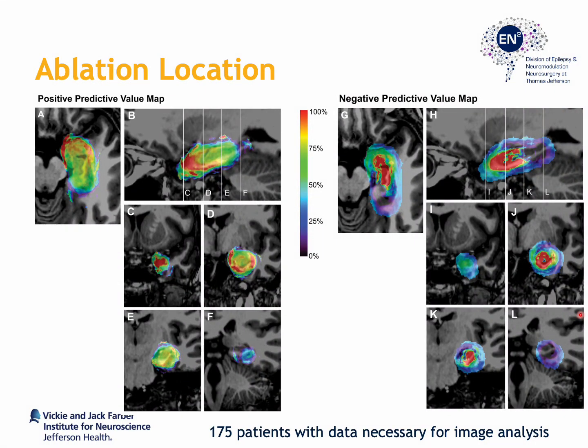On the positive predictive value map, we can see the importance of including mesial and anterior portions of the mesial temporal lobe within the ablation cavity, specifically including the anterior amygdala, the uncus, the piriform cortex, parahippocampal gyrus, as well as pararhinocortex, which are important in terms of optimizing chances of seizure freedom.